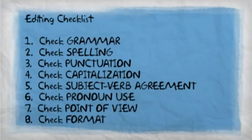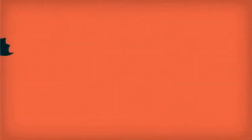Grammar corrections should be done last — they are the easiest and can usually be done quickly. Although it is tempting to make quick corrections, wait until you have made all your revisions first, because you might end up deleting grammar errors during your revision process. If you have questions about grammar correction issues, refer to the Symbaloo Webliography on Grammar for help.